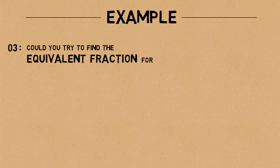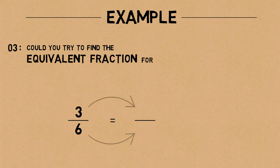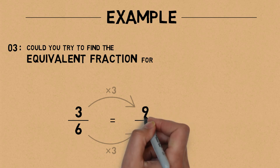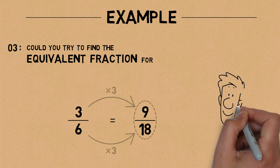Example three: could you try to find the equivalent fraction for three sixths? For three sixths, we could multiply both the denominator and the numerator by the same number. Choosing three: three times three is nine, and six times three is eighteen. So nine eighteenths is an equivalent fraction of three sixths. Remember, you could multiply by any number, but both the denominator and the numerator must be multiplied by the same number.